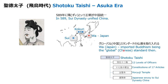Buddhism was one of the things imported because it was the global standard — at that time, the Chinese standard meant the global standard because Sui was very strong. What Shotoku Taishi did was as follows: he enacted 12 levels of officers so that the government hired officers based on capability rather than family or blood relationships. He also created a constitution with 17 articles, setting the mindset for government officers, and many people went to the Sui dynasty in China to learn the newest things.